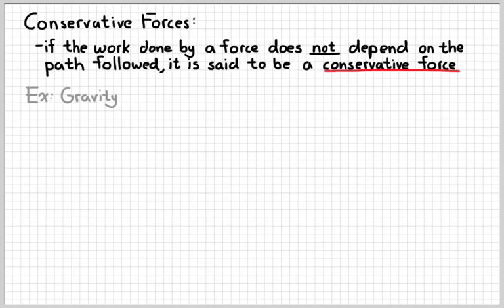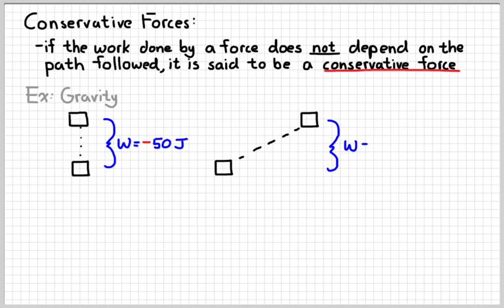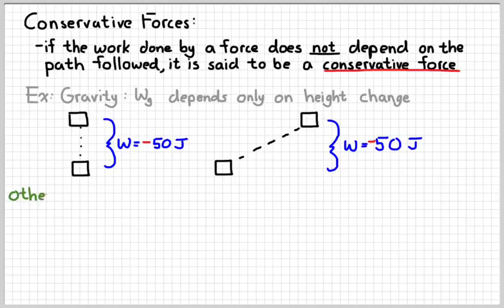A good example of a conservative force is gravity. Let's suppose that we lift something against gravity, and as we lift it, gravity does negative 50 joules of work on it. If we were to follow a different path, like sliding it up a ramp instead of lifting it straight up, the work done by gravity would still be the same. So the work done by gravity depends only on the change in height, not the path that's actually followed. Therefore, gravity is a conservative force.